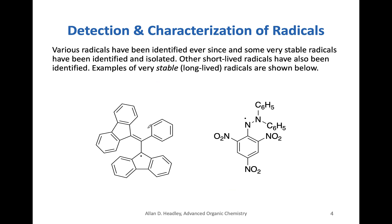Here are some other radicals that have since been identified. Some are very stable and can actually be isolated, while others are short-lived but can be identified by different experimental methods. We will define stable radicals before this lecture is out, in terms of what criteria are used to define the stability of radicals.